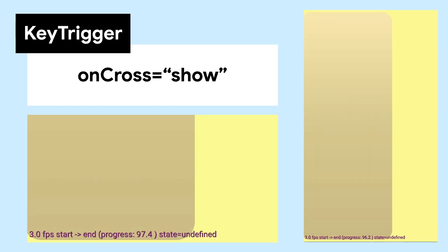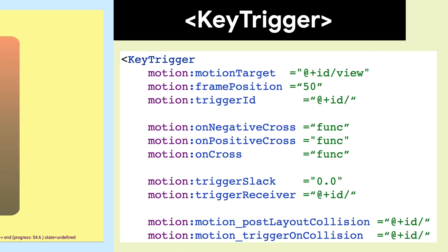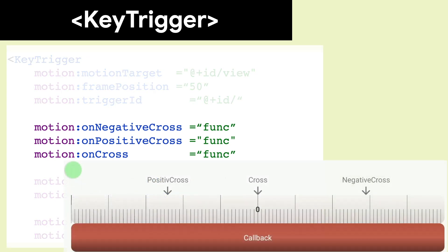It can directly call simple methods on a view using three attributes: OnCross, OnPositiveCross, and OnNegativeCross. These attributes cause the methods to be called when crossing the key position point. We'll be adding more functionality to Key Triggers in 2.1, so stay tuned.